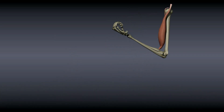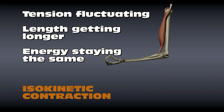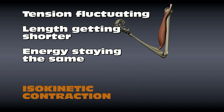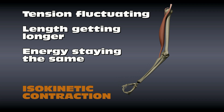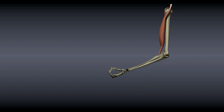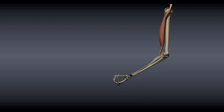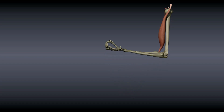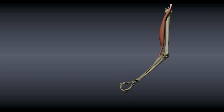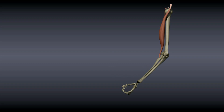In isokinetic contractions, the energy required by the muscle stays the same throughout the contraction. The tension across the muscle may change, and the length of the muscle changes, but a constant amount of energy is required. Isokinetic contractions are the most effective at building strength, but special machines are required to allow for isokinetic exercises. When a simple dumbbell is lifted, the energy may change throughout the contraction to maintain the same muscle tension. Isokinetic contractions can also be either concentric or eccentric.